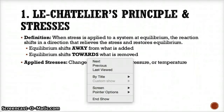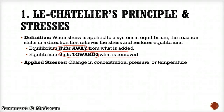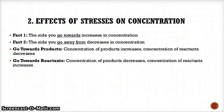To summarize from these first two slides: equilibrium will always shift away from what is added, because you have to consume it and bring it back down to equilibrium levels. Whenever you remove something, equilibrium must shift towards that side to produce more of it and restore it back up to equilibrium levels. Whichever side you go towards will increase in concentration; whichever side you go away from will decrease in concentration.